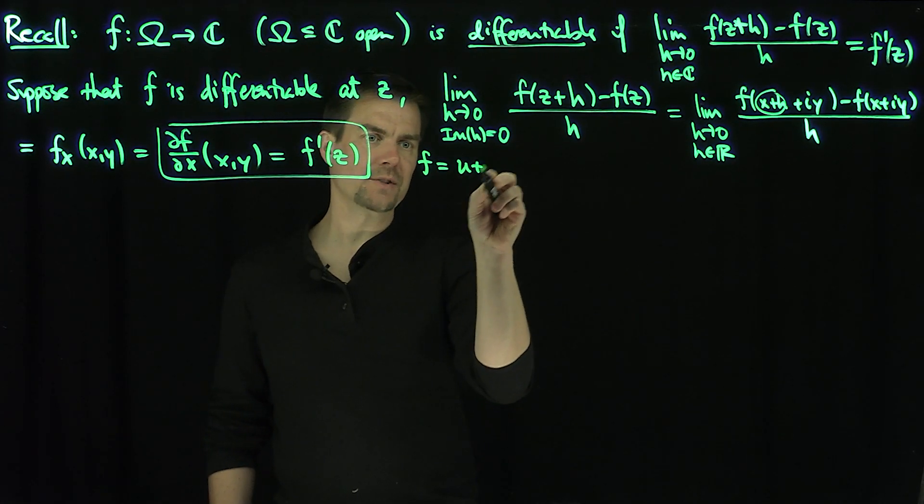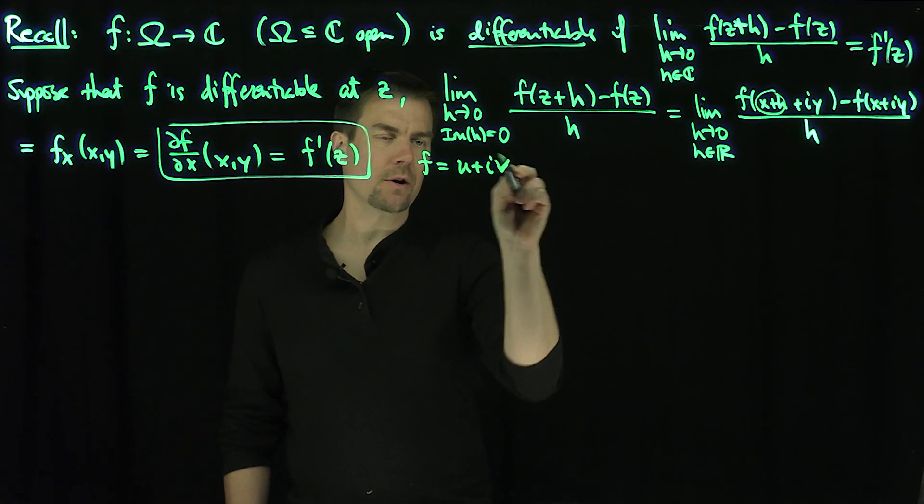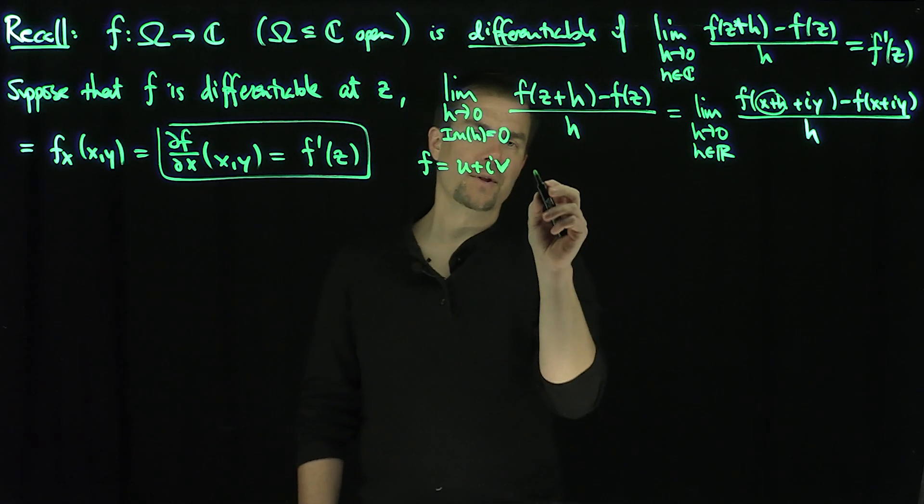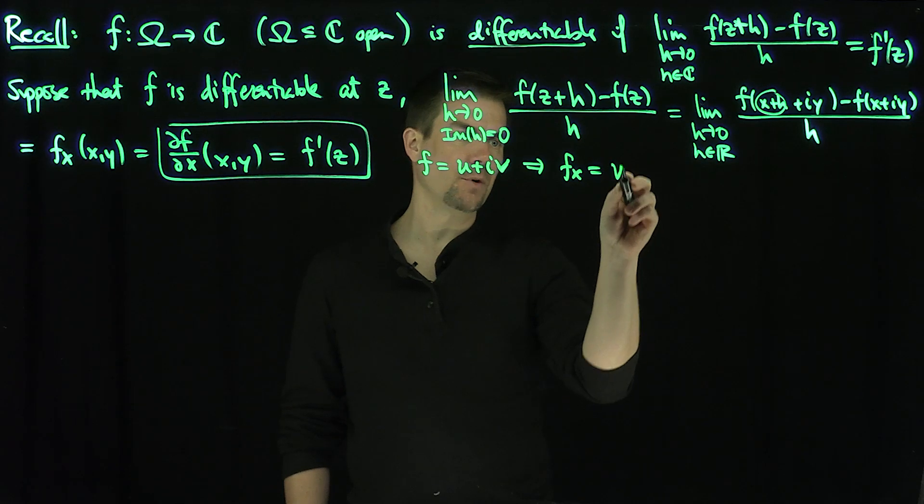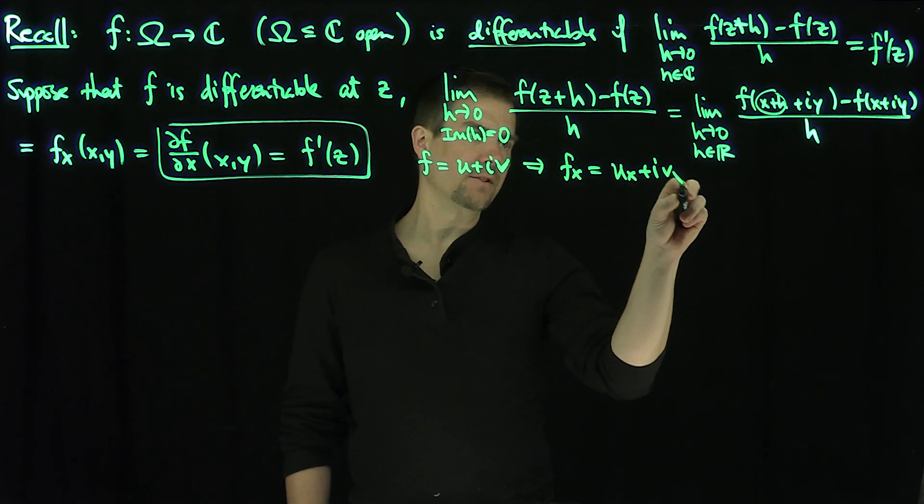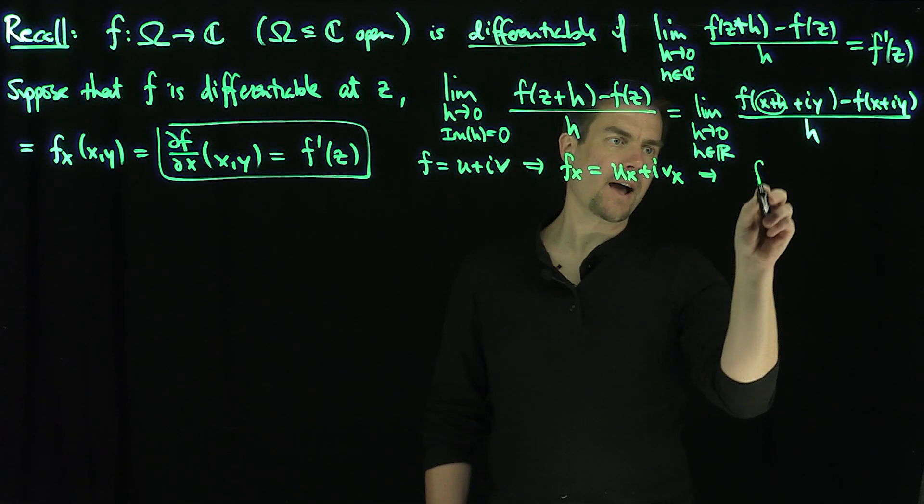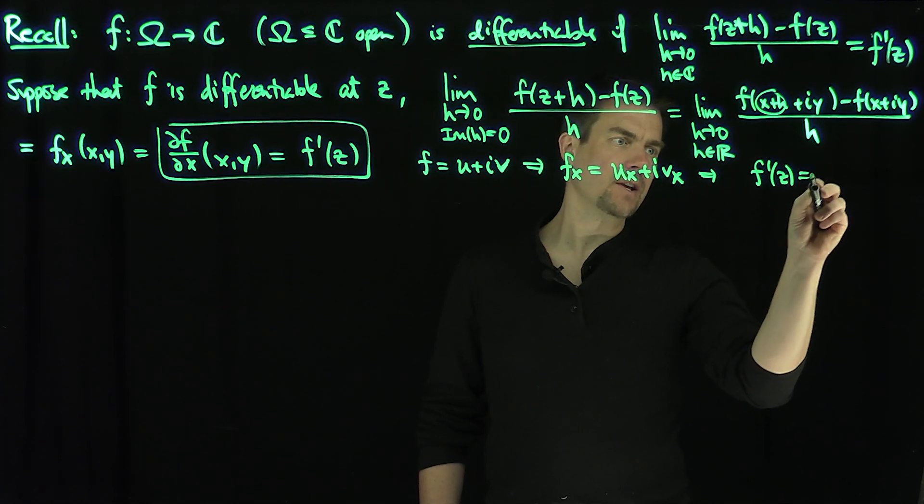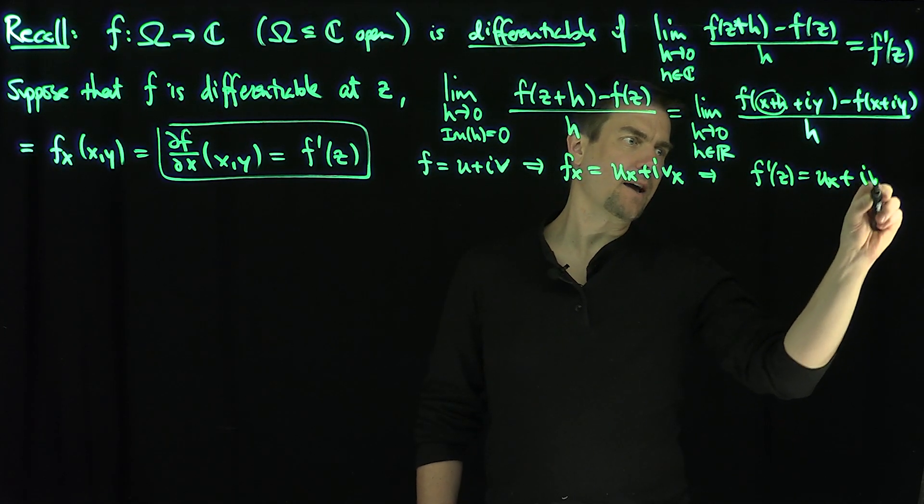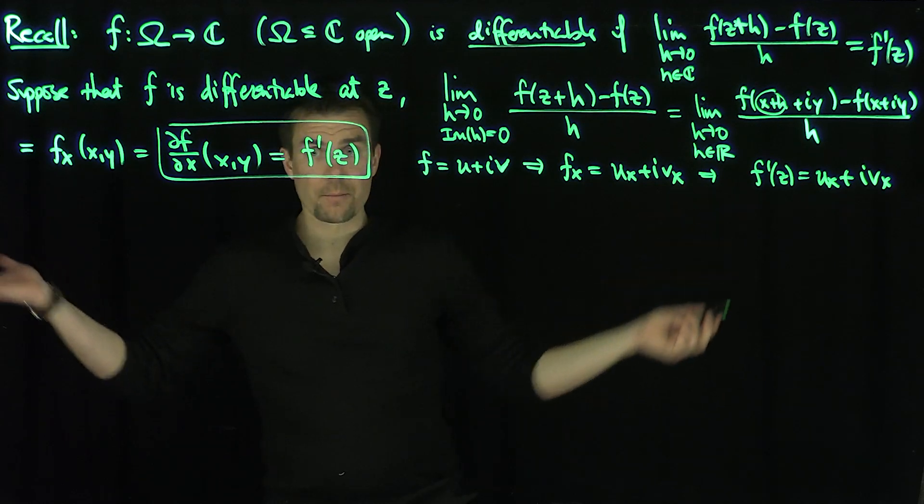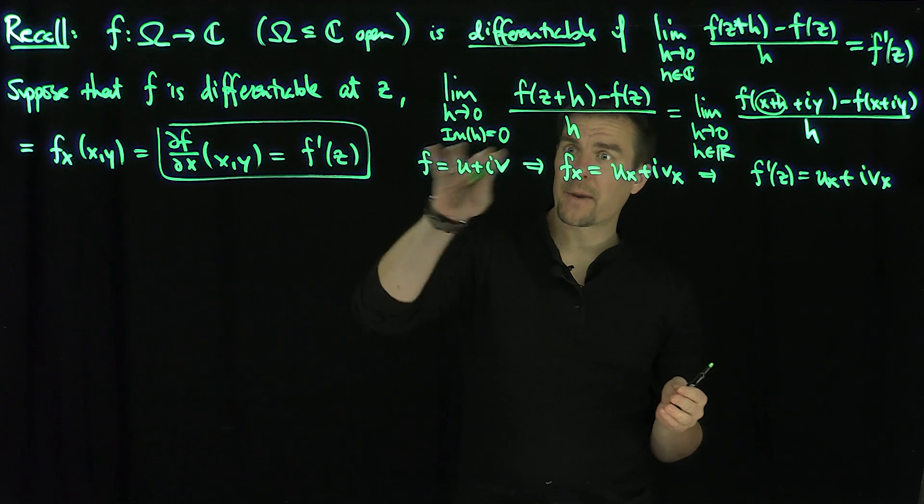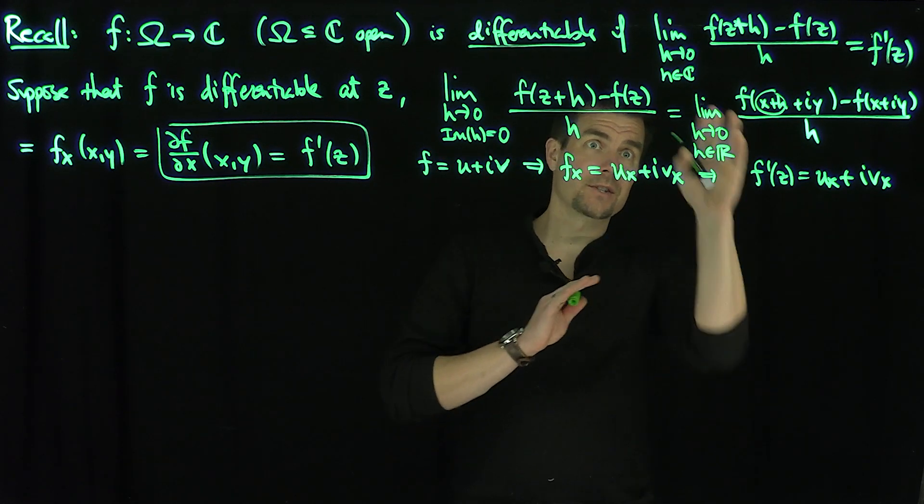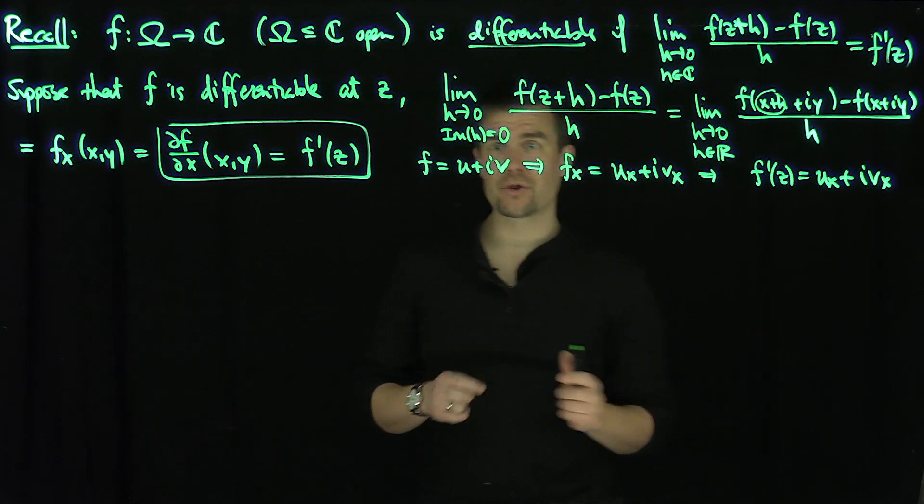Writing f as u + iv, assuming u and v are also differentiable functions, we can say f_x is u_x + iv_x, which tells me that f'(z) = u_x + iv_x. The beautiful thing is I used one trajectory; now I'll choose another trajectory.